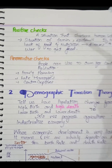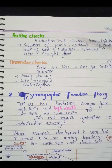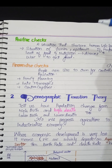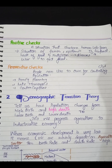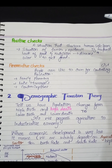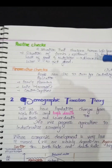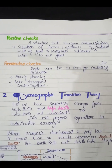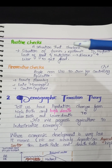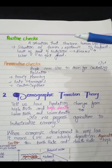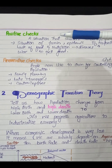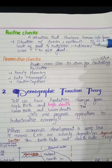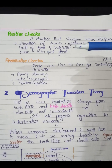Now we are talking about positive checks. Positive checks are situations that naturally occur and shorten the human lifespan — situations of famine, epidemic diseases, lack of food and nutrition. When we don't have food to eat, epidemic diseases spread and people go to war. These are positive checks.